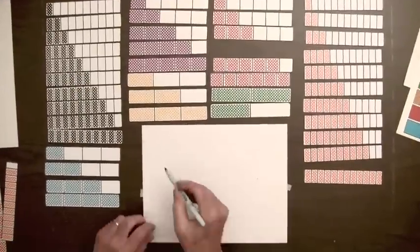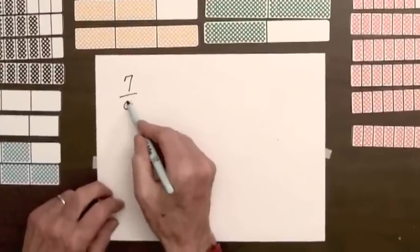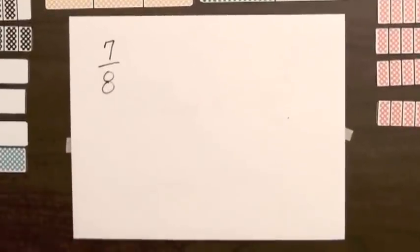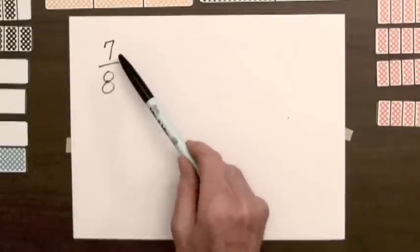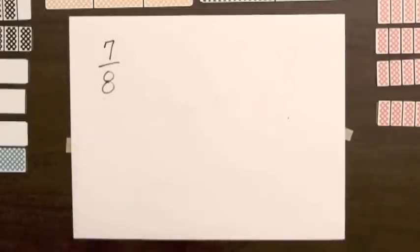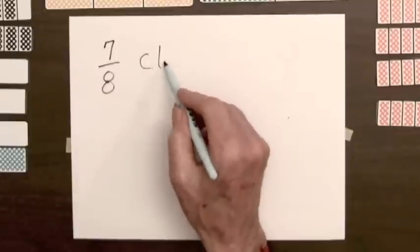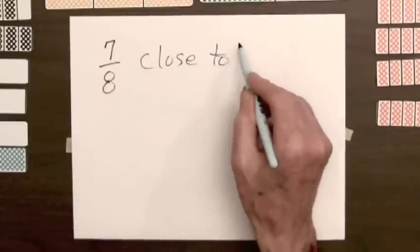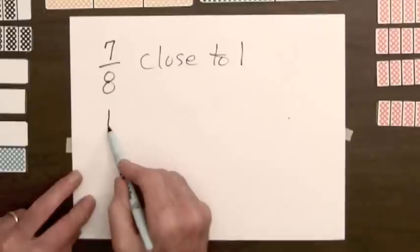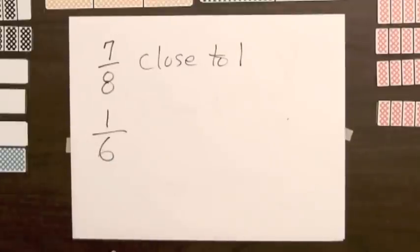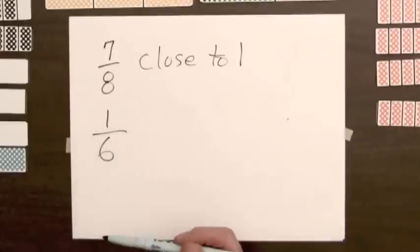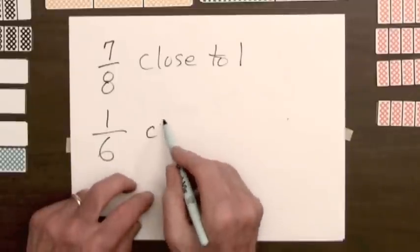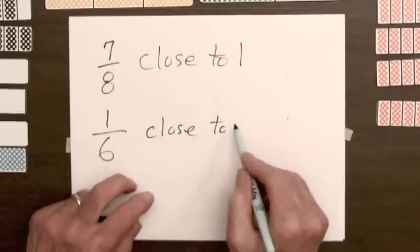Conversely, if students are given a fraction — say seven over eight — they should be able to explain that this represents something that has eight equal parts, and the seven indicates seven of those parts. Seven out of eight is pretty close to the whole thing, so this fraction is close to one. On the other hand, one over six represents something with six equal parts and one part indicated, so this fraction is close to zero.